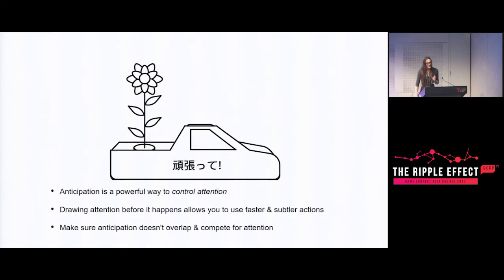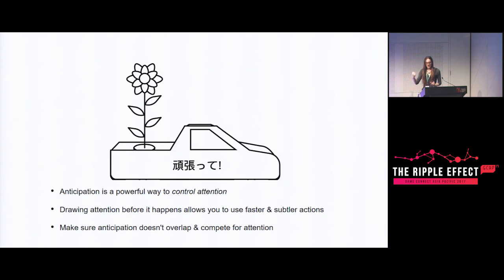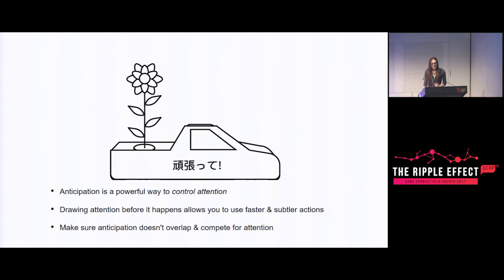Anticipation is a powerful way to control attention. When you're thinking about movement, people's attention is a limited resource - they only have so much ability to process what they're looking at. Using anticipation to draw eyes toward where something is about to happen is a really powerful tool. It means you can use faster, shorter, subtler actions that you otherwise wouldn't be able to pick up. But if you have a good anticipation that prepares the viewer for it to happen, they'll catch stuff they would otherwise miss.